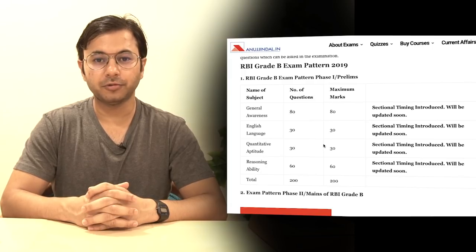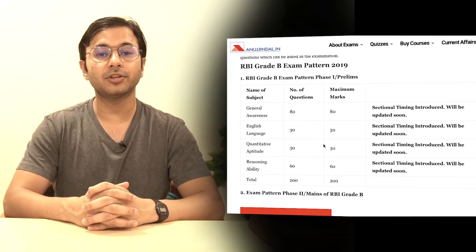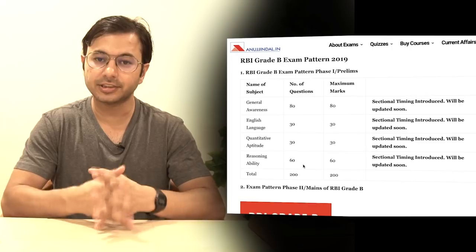Sectional cut-off is already being followed in RBI phase 1, but sectional timing has been recently introduced. If you want to know more about sectional timing and how to prepare keeping in mind this change, click on the i-card above. General Awareness can be divided into two further parts: current affairs and the static portion. For both these portions, the Spotlight magazine that I release on a monthly basis is more than enough. You can rely on it completely because it is specifically formed for RBI examination only.